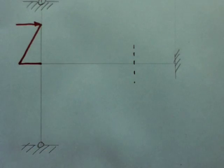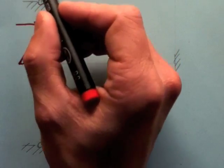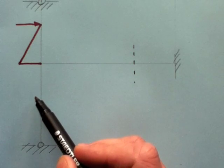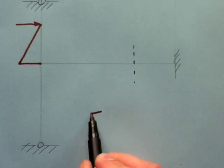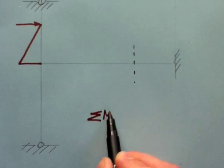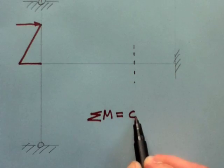We must now consider what happens at the beam-column connection. The moment coming into the beam-column connection is resisted by moments generated in both the beam and the column, and we know that the sum of the moments at this joint must be equal to zero.